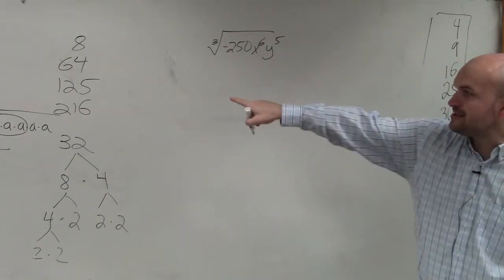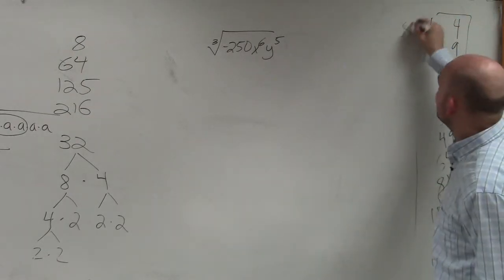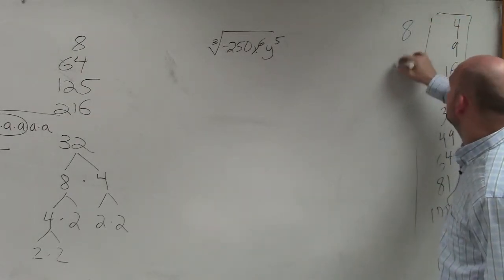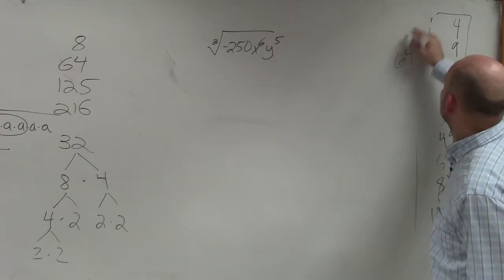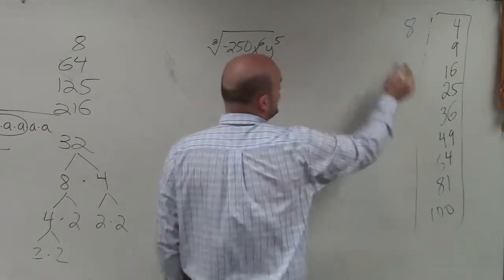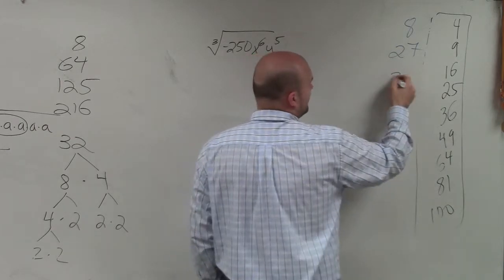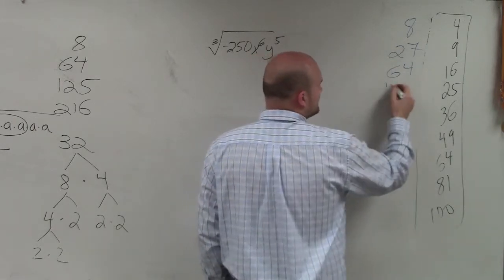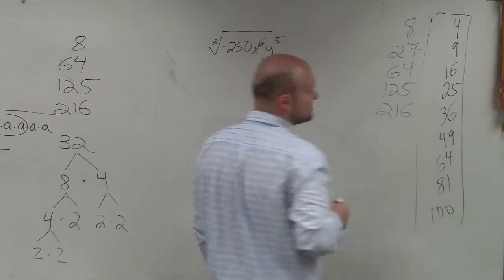So the way that I, as I mentioned to you guys, that I like to use is here are my square numbers. Write down the list of cube numbers. Oh, shoot, I forgot to write. So 2 times 2 times 2 is 8, 3 times 3 times 3 is 27, 4 times 4 times 4 is 64, 5 times 5 times 5 is 125, and 6 times 6 times 6 is 216.